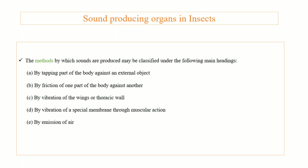The fourth method involves a special muscular membrane — a tymbal membrane — where contraction of muscles causes sound production. The fifth method is that insects emit air from their body to produce sound. So these are the five different methods that insects use to produce sounds.